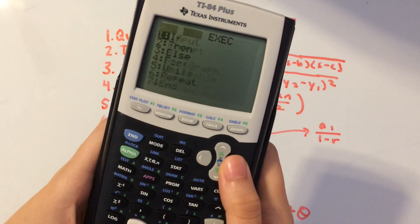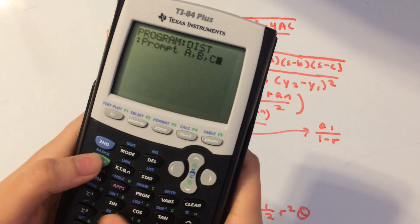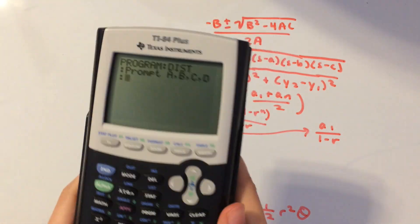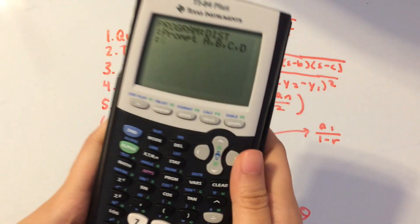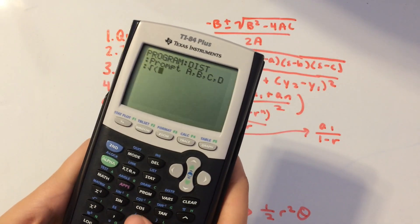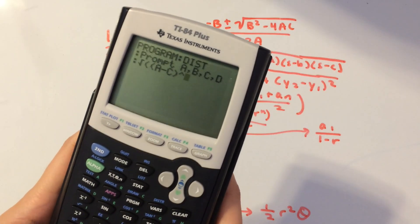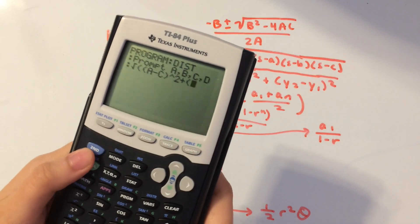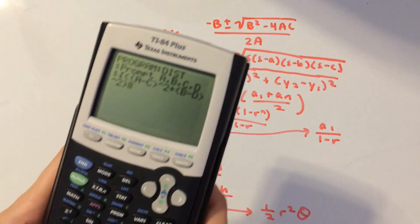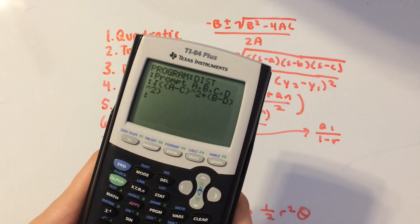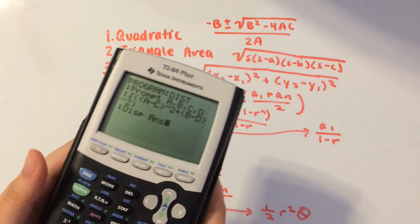Hit Program, move to IO, and prompt for Alpha A, comma B, comma C, comma D. Now compute the square root of — in parentheses — (A minus C), close parentheses, squared, plus (B minus D), close parentheses, squared, then close the initial parentheses. That's the distance formula. Display the answer and we're done.